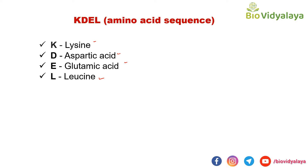For lysine, the three letter code is L-Y-S. For aspartic acid, it is A-S-P. For glutamic acid, it is G-L-U. And for leucine, it is L-E-U. So these are the three letter codes for the KDEL sequence.